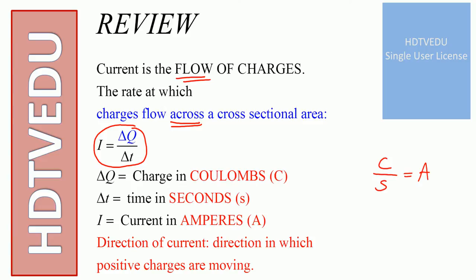Direction of current is the direction in which positive charges are moving. In a metallic wire, it is the electrons that flow.